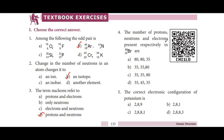The number of protons, neutrons and electrons present respectively in Br-35 are 35, 45, 35. This is the order: proton, neutron, electron.